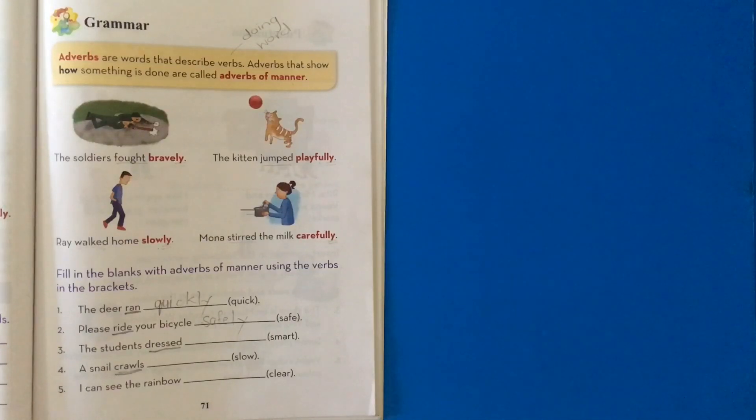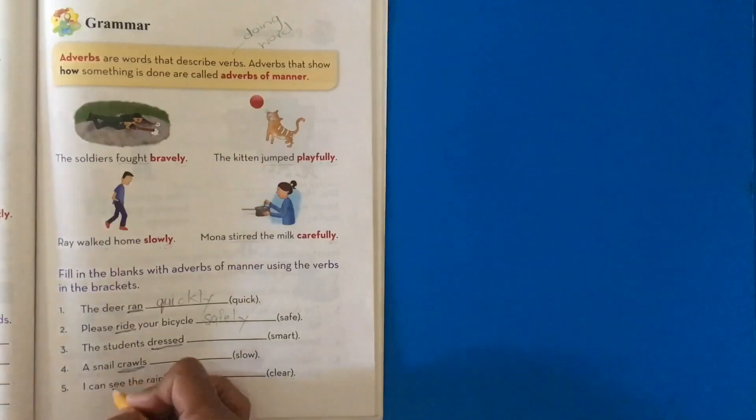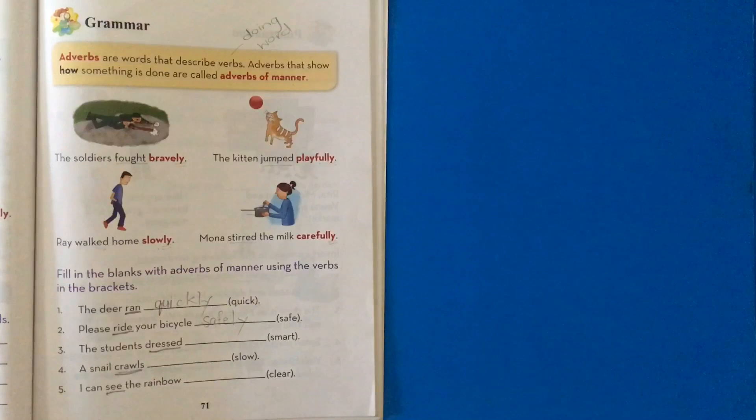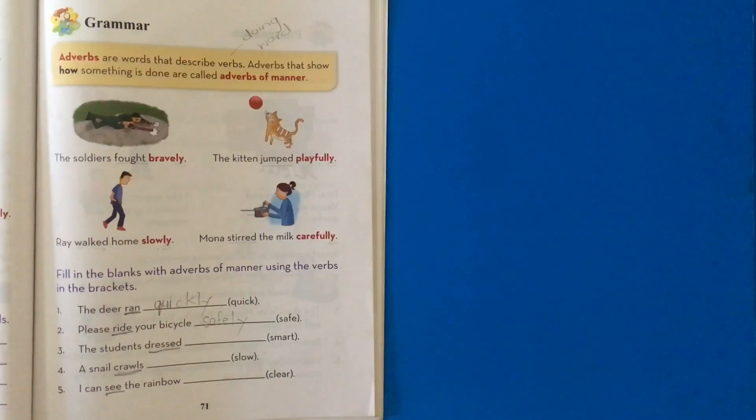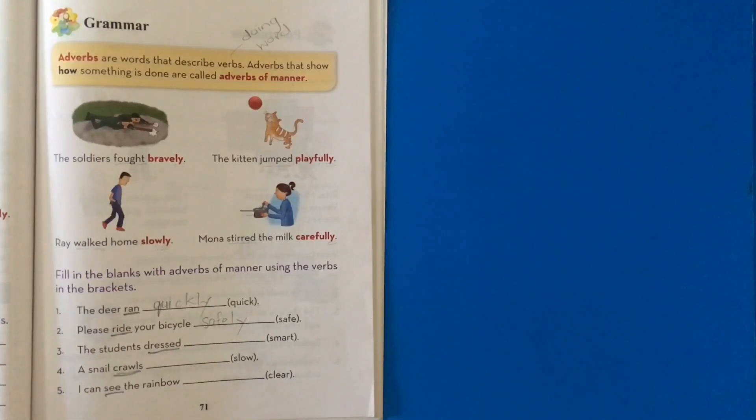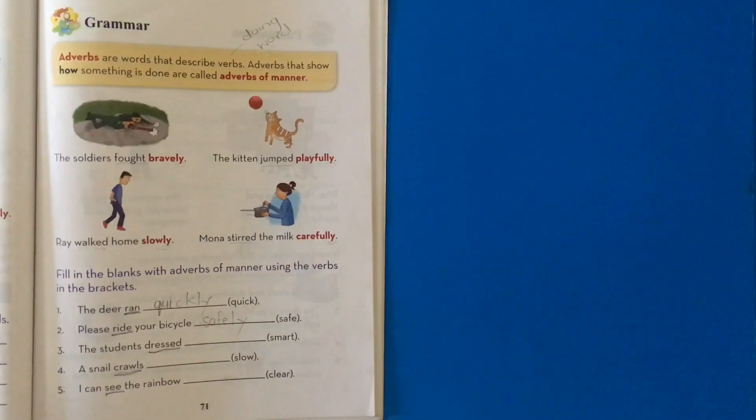I can see the rainbow. What is our verb? See. I can see the rainbow. Clear? What is our formula? Clear plus L-Y. I can see the rainbow clearly, and it describes the verb and we'll be able to identify it easily because adverb has the word verb in it because it describes the verb. Got it?